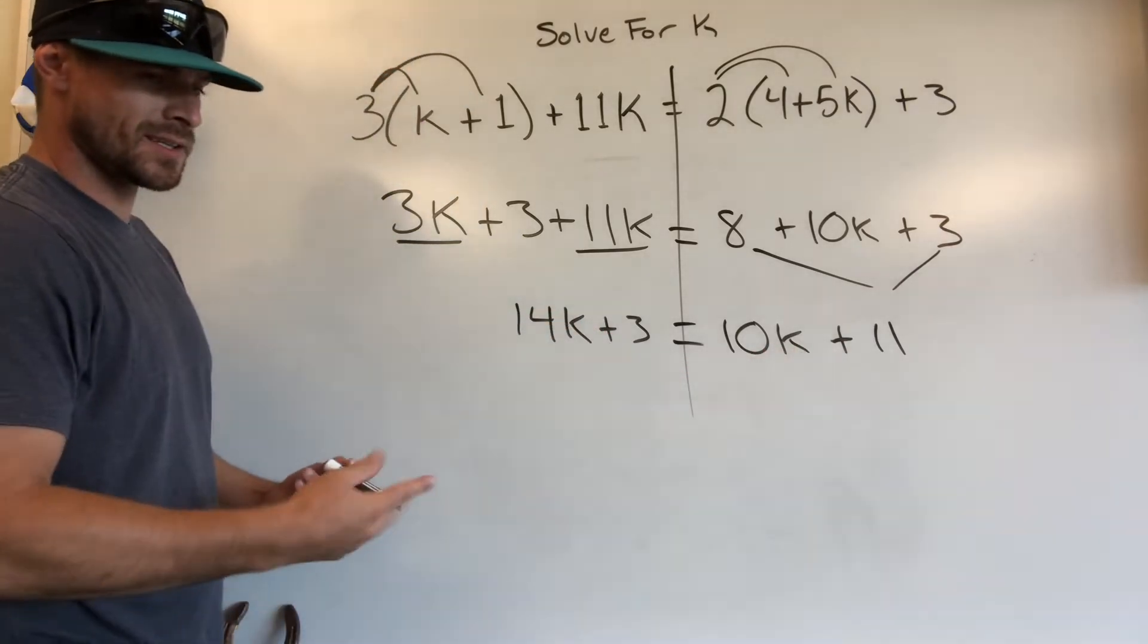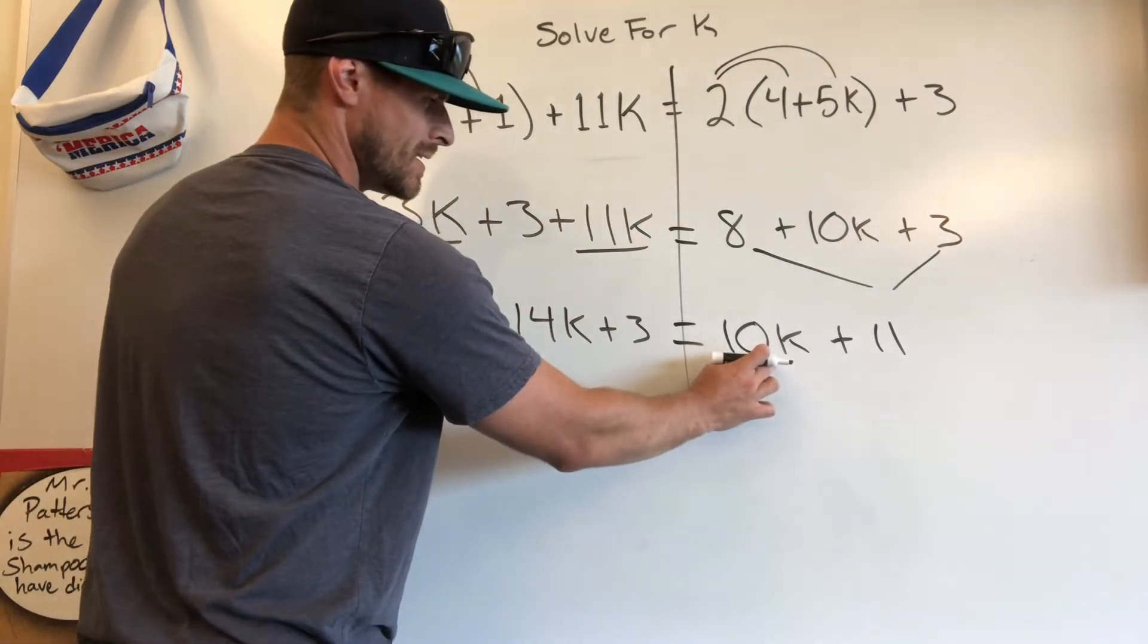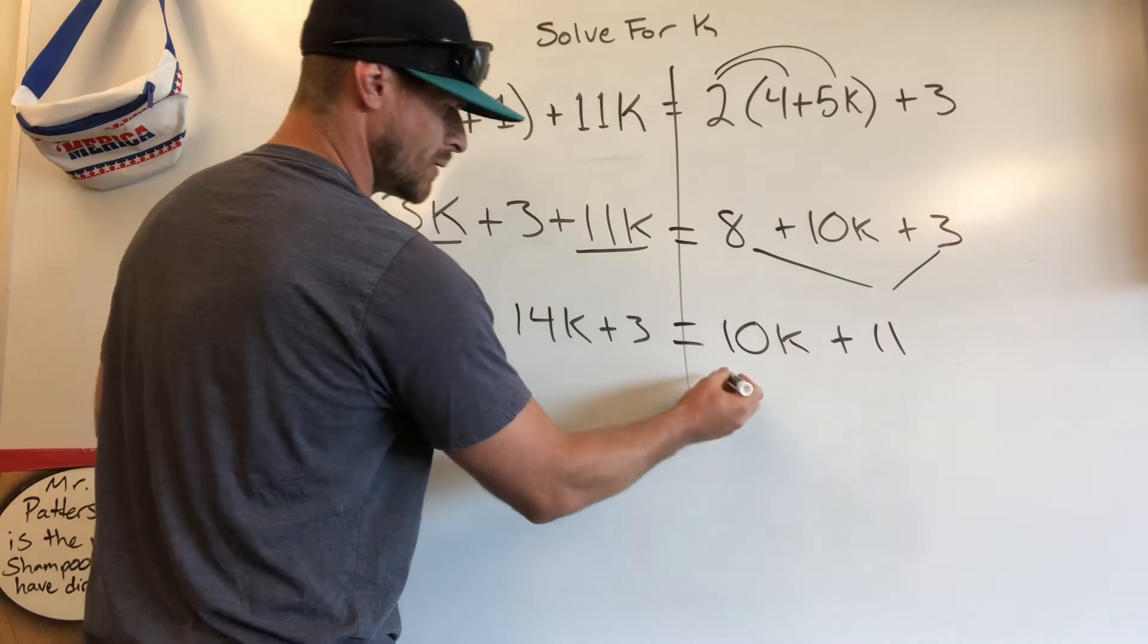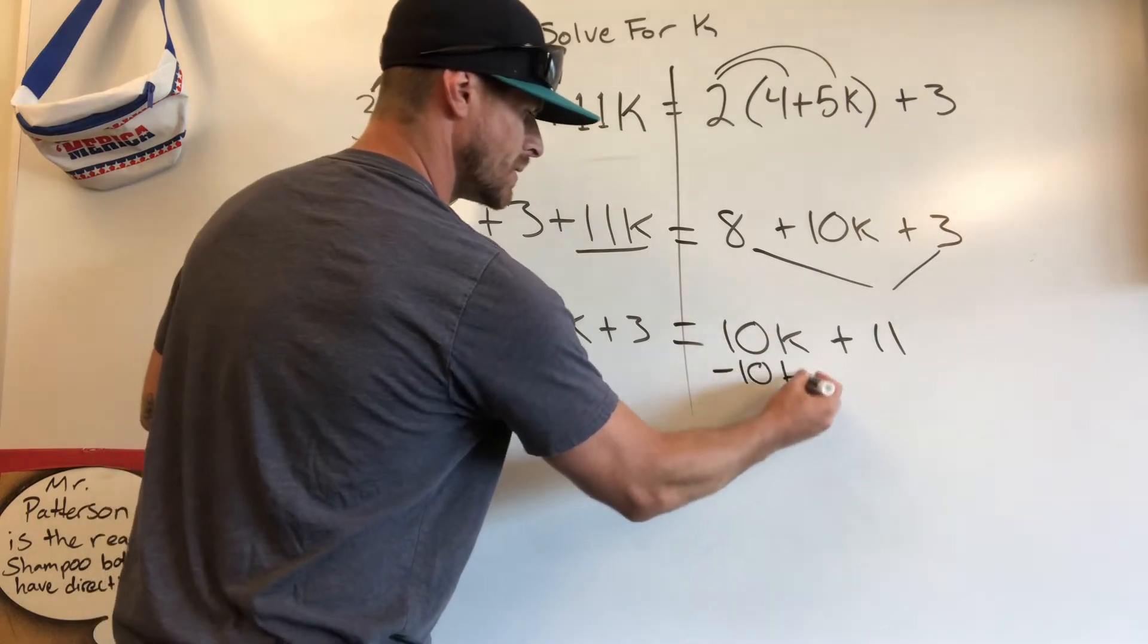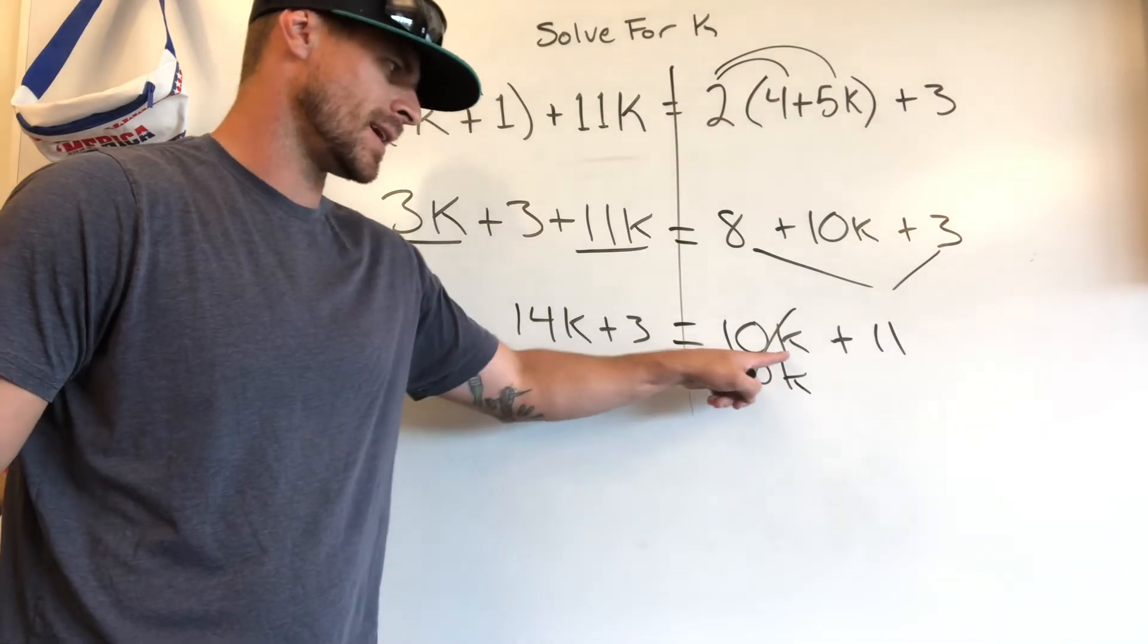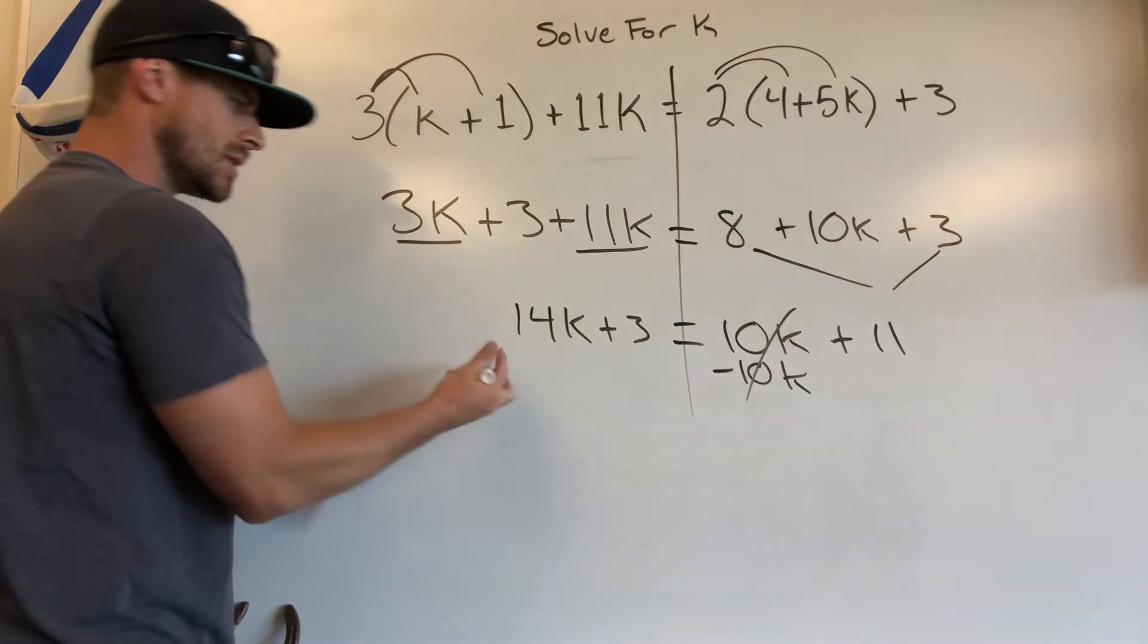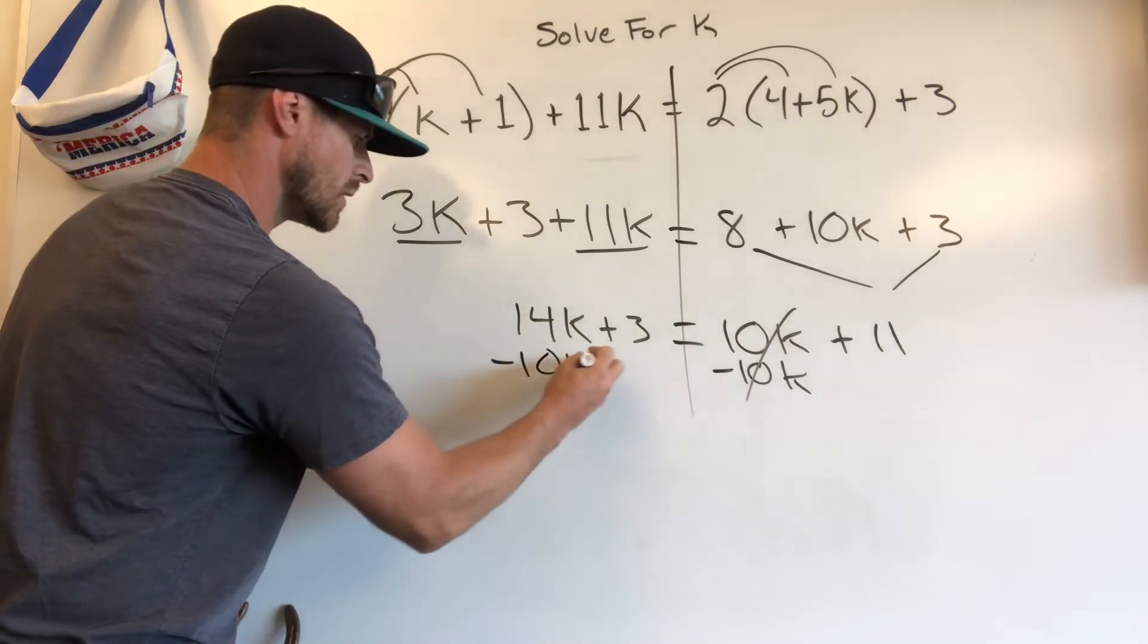I think that's kind of a silly decision, however, because taking 14k away from 10k is going to give you a negative value. I always try and avoid the negative, so the route I would take here is taking away 10k. Take it away, cancels it out. If you do it to the right side, we've got to do it to the left side, so take away 10k over here as well.